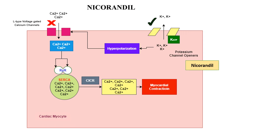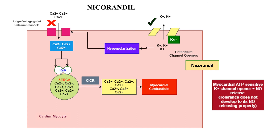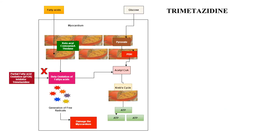Nicorandil is a new category of drug — it is a potassium channel opener. Potassium channel openers cause hyperpolarization, affecting L-type voltage-gated calcium channels, which leads to calcium influx and myocardial contraction. It is a myocardial ATP-sensitive potassium channel opener and also a nitric oxide releaser. Unlike organic nitrates, tolerance does not develop to nicorandil's nitric oxide-releasing property.